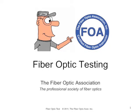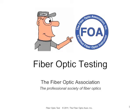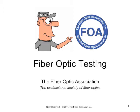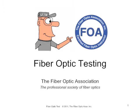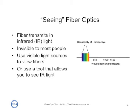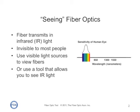This is lecture 13 in the Fiber Optic Association series of lectures on fiber optics. This one is about visual testing of fiber optics. Seeing what goes on in fiber optics can be difficult because the human eye is not sensitive to the infrared light that we use for transmission. It's invisible to most people, although some can see out in the 850 nanometer range.